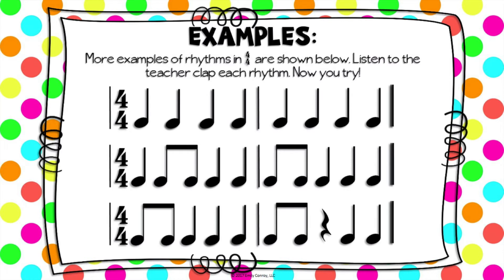For this next one, remember that when we get to those eighth notes — the two notes that are barred together — instead of saying ta, we say ti-ti. I'll clap it first, and then the second time, how about you try it without me? One and two, and here I go: ta, ti-ti, ta, ta, ti-ti, ta, ta, ta.